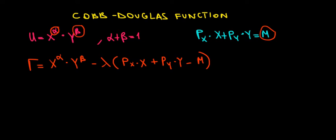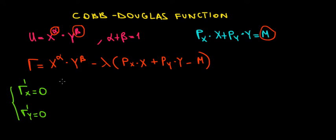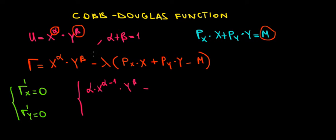Now let's solve the Lagrange. Recall that we must take into account the first-order conditions: the derivative of the Lagrange with respect to x equals 0, and the derivative with respect to y must equal 0 as well. For the derivative with respect to x, x is the variable and everything else is constant. We get α·x^(α−1)·y^β minus lambda times px, since the derivative of px·x with respect to x is just px.